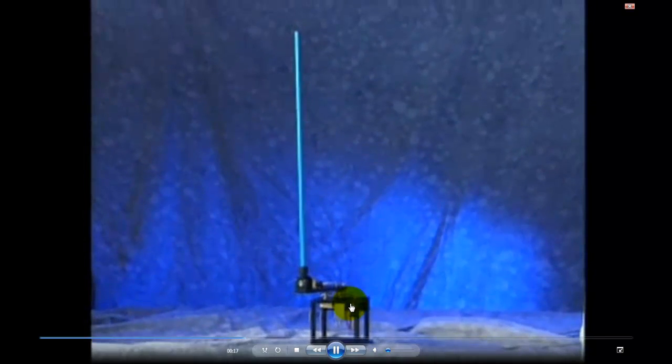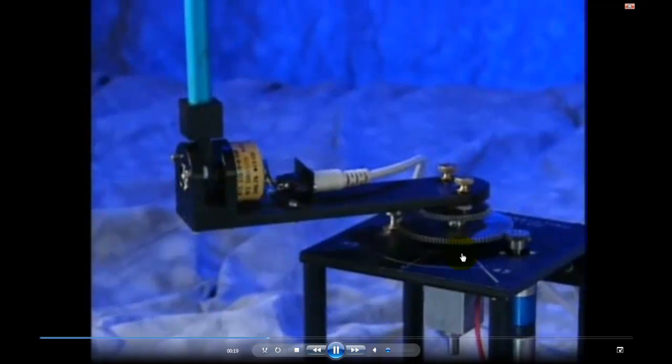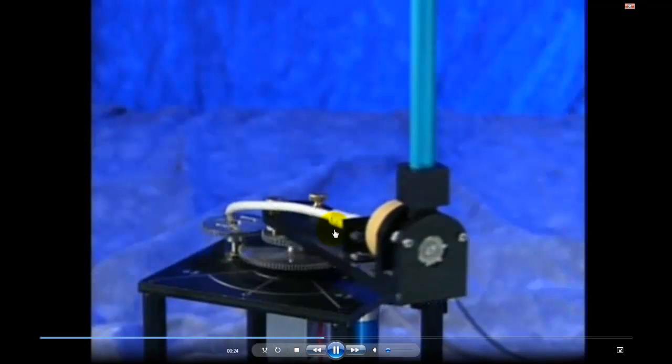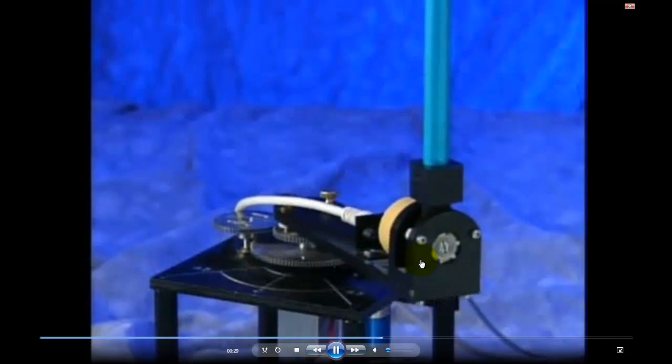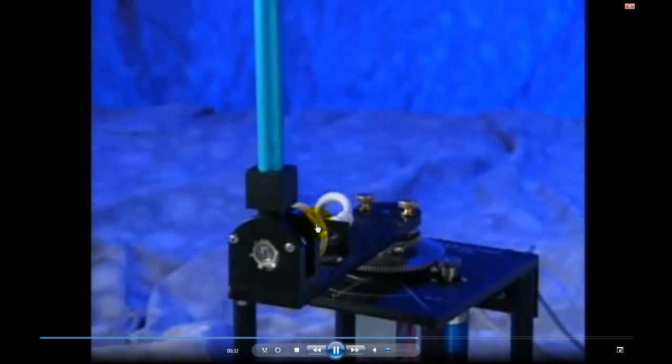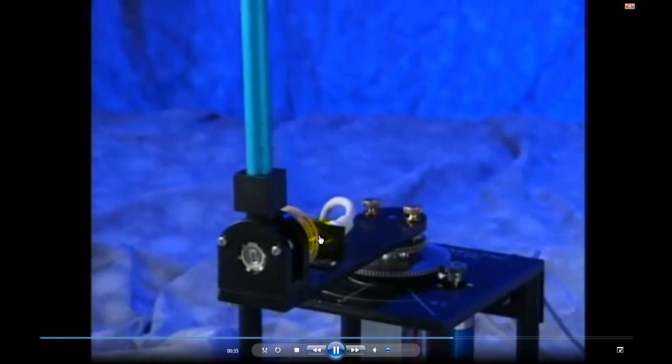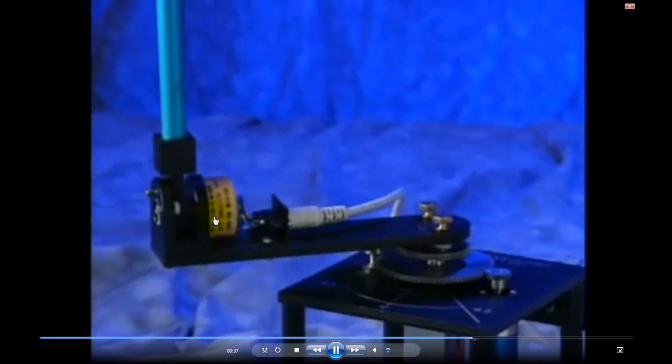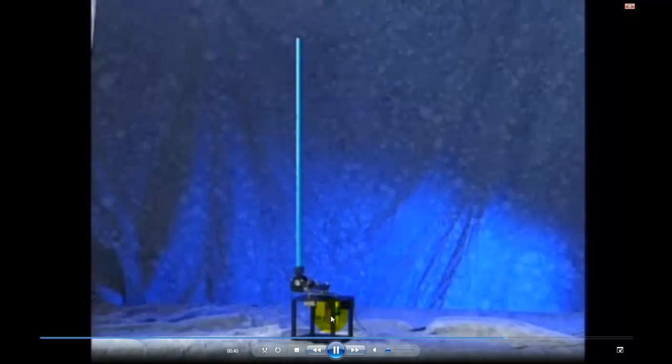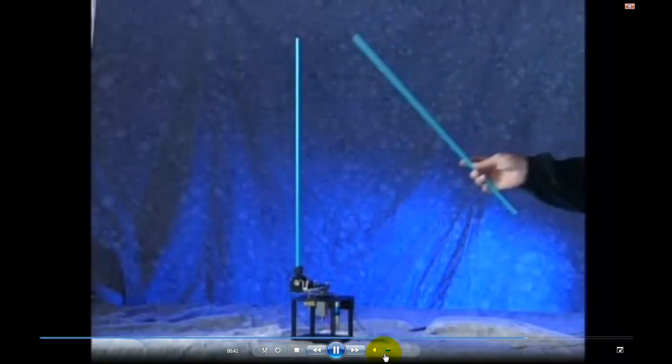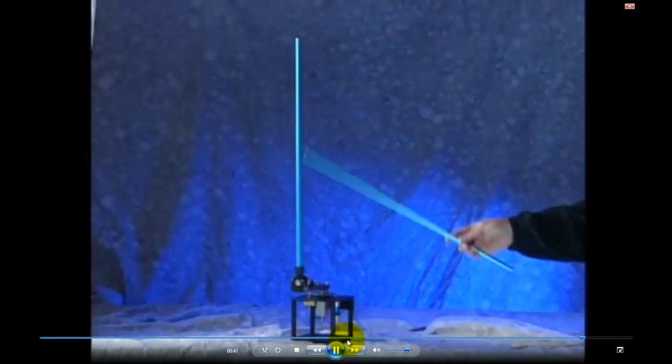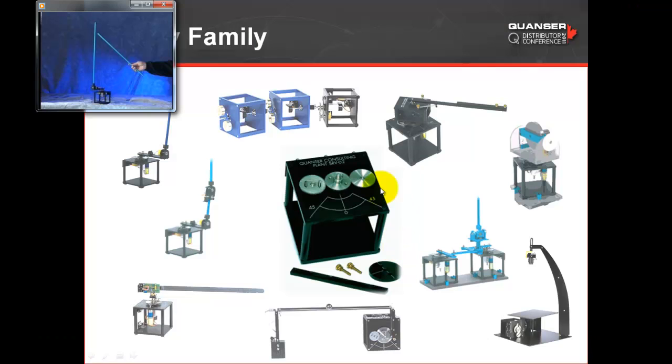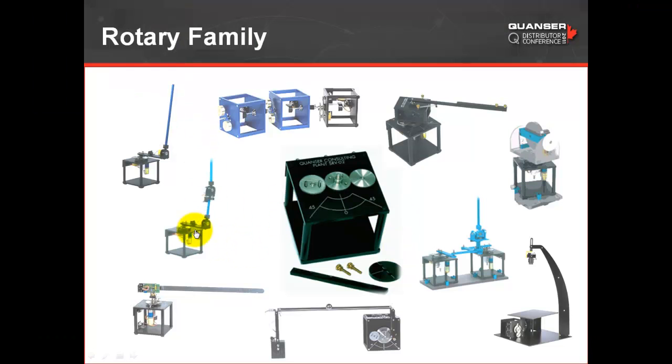Instead of just teaching speed and position control of the basic servo motor, you can actually mount a module on top. Here you're inverting a pendulum. This pendulum is actually being balanced by this system. All you have is an encoder here. In this video we're showing an analog encoder, but the new systems all have digital encoders.